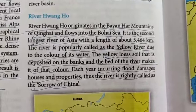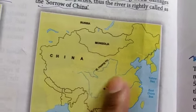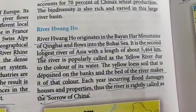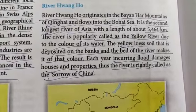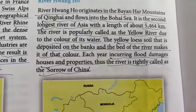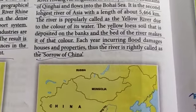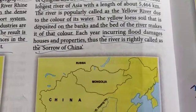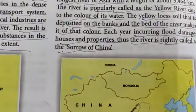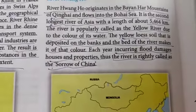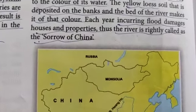River Huang He originates in the Bayanhar Mountains of Qinghai. It is the second longest river of Asia with a length of about 5,464 kilometers. The river is popularly called the Yellow River due to the color of its water — the yellow loess soil deposited on the banks and bed of the river gives it that color. Each year recurring floods damage houses and properties. Thus, the river is rightly called the 'Sorrow of China.' Please mark this as a give-reason question: River Huang He is known as the Sorrow of China because recurring floods damage houses and properties every year.